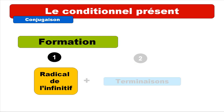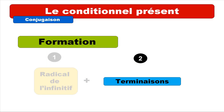Sur le conditionnel présent, if you want to make one, first you've got to take what we call le radical de l'infinitif, and then you need to combine it with the terminaison — the endings.